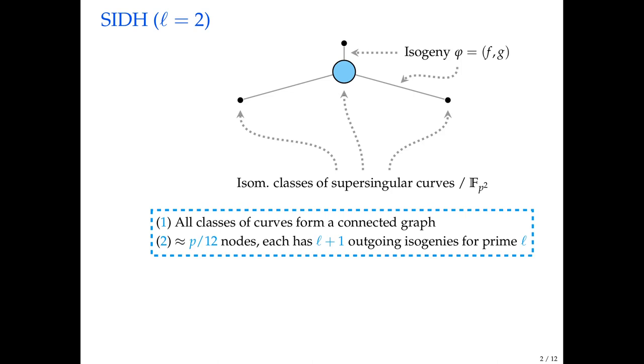Let's start with a bit of an introduction to isogeny-based crypto. It started as SIDH, which is supersingular isogeny Diffie-Hellman. The idea behind is that it's kind of a graph-based protocol. We built this graph from nodes. These nodes here are going to be isomorphism classes of supersingular curves defined over F of P squared, where P is some prime which is chosen as a parameter. If we take the set of all these curves, it turns out that they all form a connected graph.